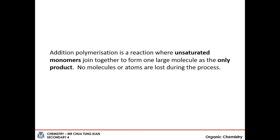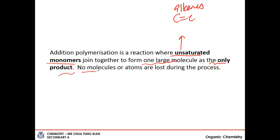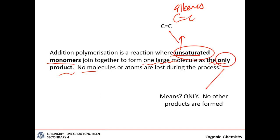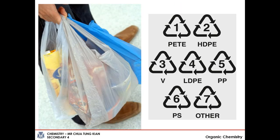For addition polymers, they are formed by unsaturated monomers - monomers that contain at least one carbon-carbon double bond. So these are alkenes. When they come together, they form one large molecule, and that is the only product formed. Nothing is lost during the process. The first addition polymer we must know is polyethene.